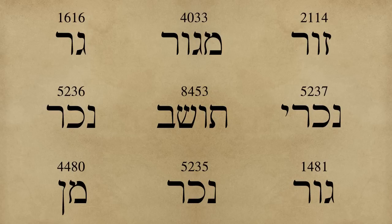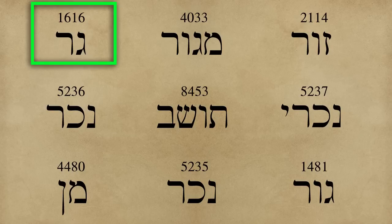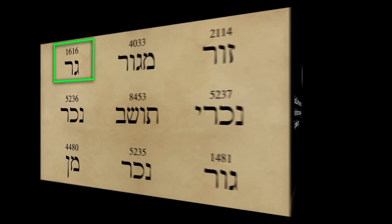Now you have some people who say Israelites were never called strangers in the Bible, and then you have some who say a stranger can be an Israelite, but only if that word stranger is the Hebrew word gar, number 1616 in the concordance. So let me give you an example of what I'm talking about. This is Exodus 2 and 21.